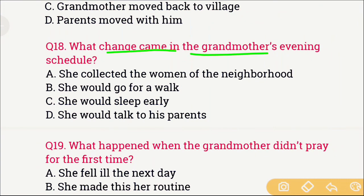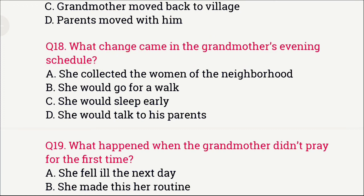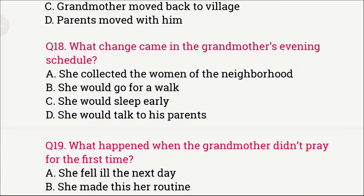Question number 17: What change came in the grandmother's evening routine? The grandmother used to pray in the evenings, but a change was noticed. The options are: A) She collected the women of the neighborhood, B) She would go for a walk, C) She could sleep early, and D) She could talk to his parents. The right answer is option A — she collected the women of the neighborhood, started playing drums and singing songs. This was a very unusual change that the author observed.